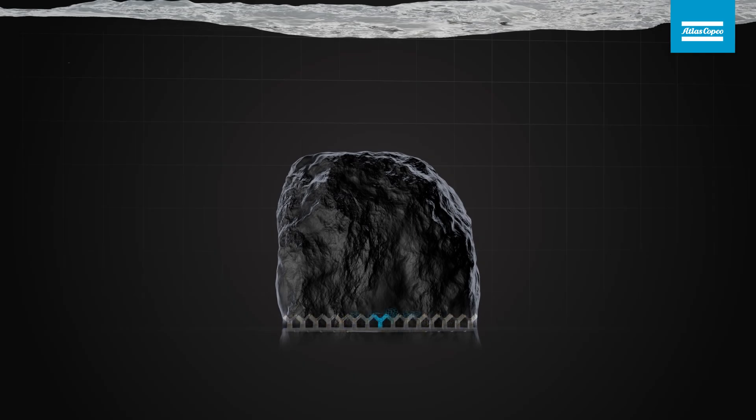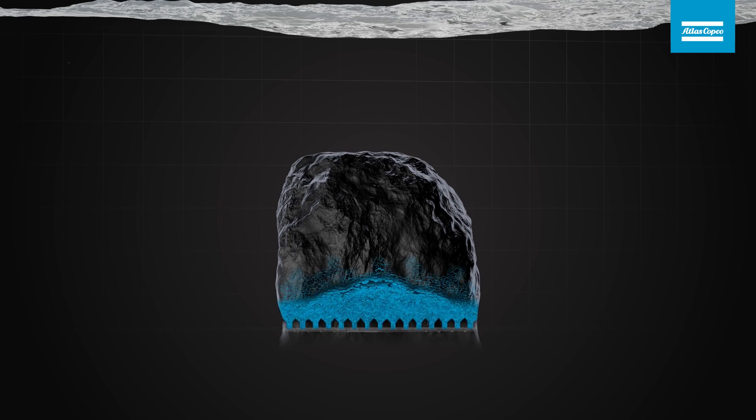By drawing rock from the extraction level in the lower part of the mine, a gap is created. Absence of support for the overlying rock mass, together with rock stress and gravity, will cause the rock mass to cave.